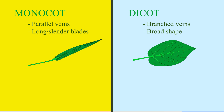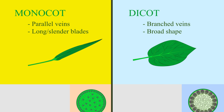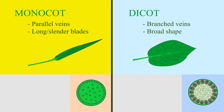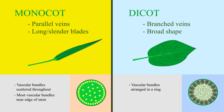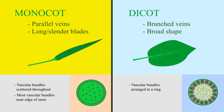The stems leading up to these different leaves are also different. Monocots have their vascular bundles scattered haphazardly, although most are found near the edge of the stem. Dicots, however, have their vascular bundles arranged in a ring.